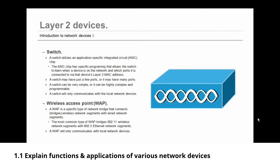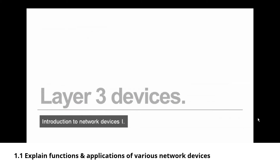Another layer two device is the wireless access point — the WAP. A WAP is a specific type of network bridge that connects or bridges wireless network segments with wired network segments. The most common type of WAP bridges an 802.11 wireless network segment with an 802.3 Ethernet network segment. Just like a switch, a wireless access point will only communicate with local network devices.